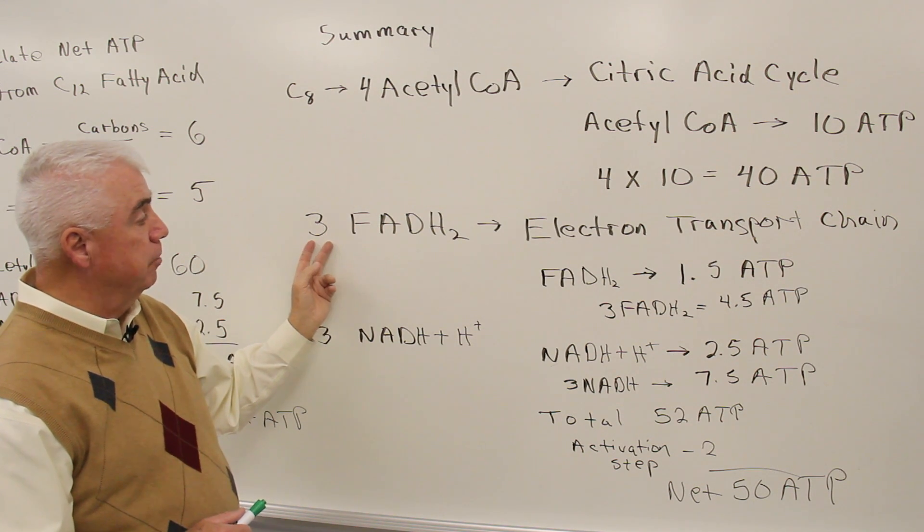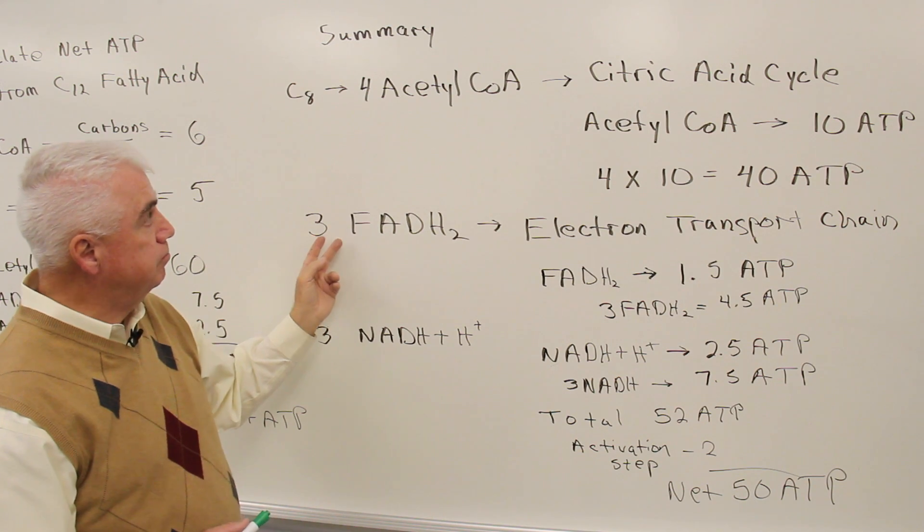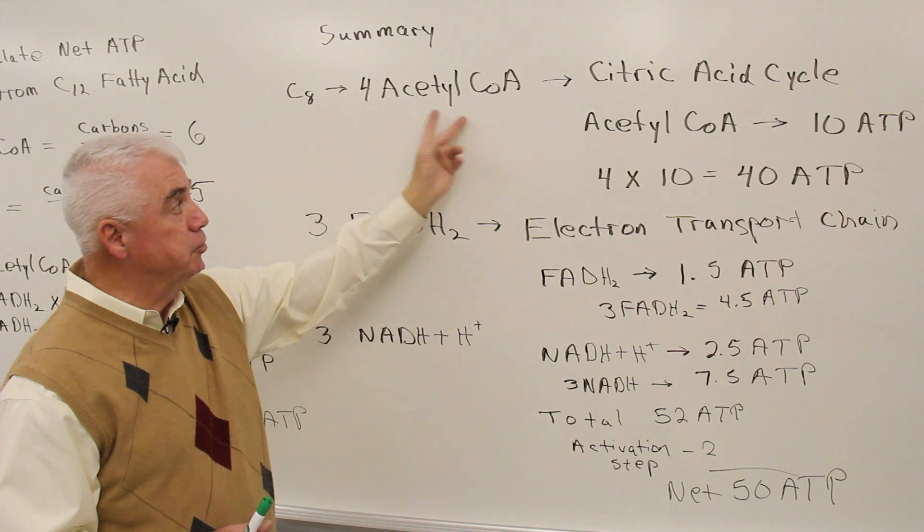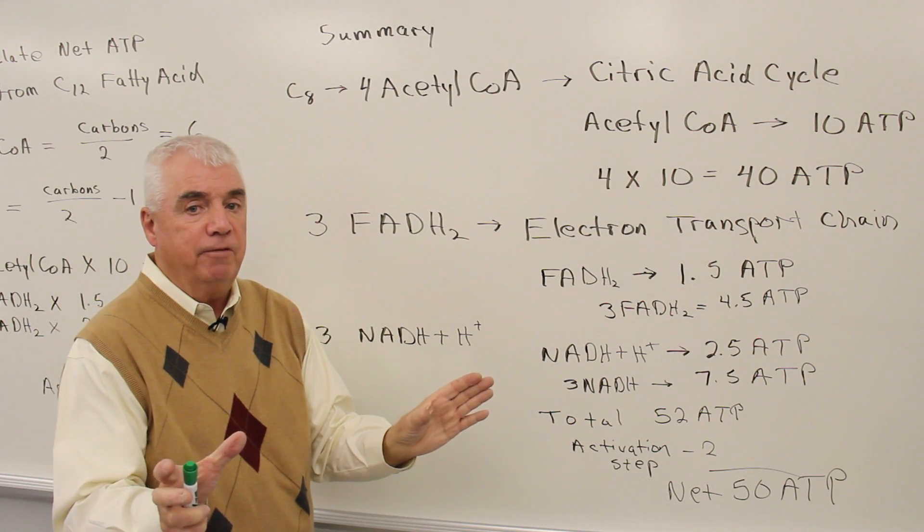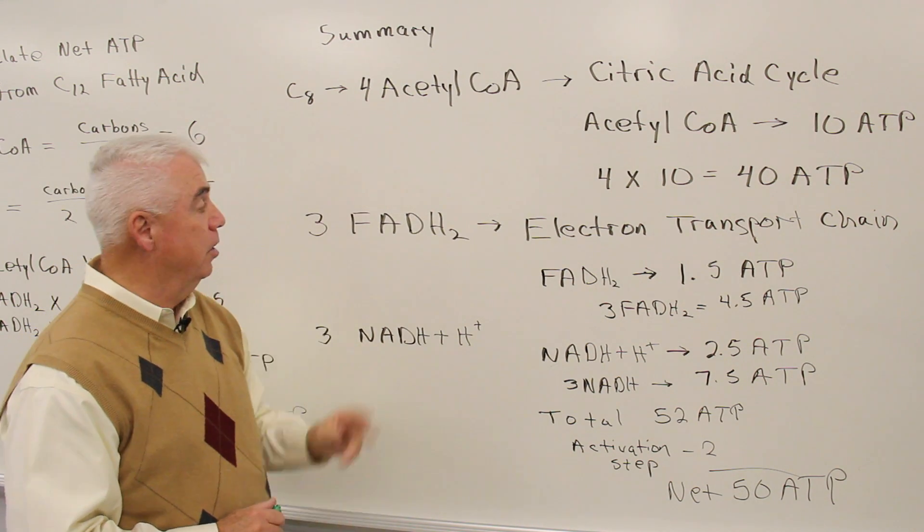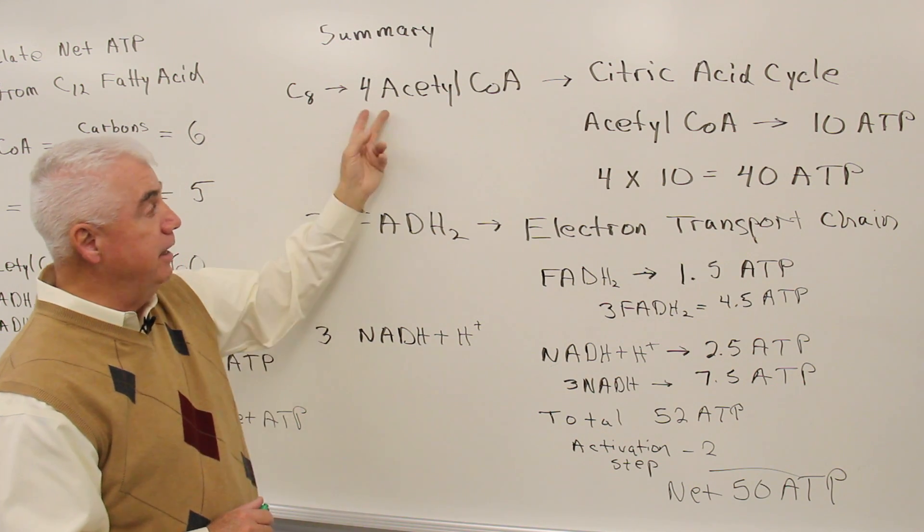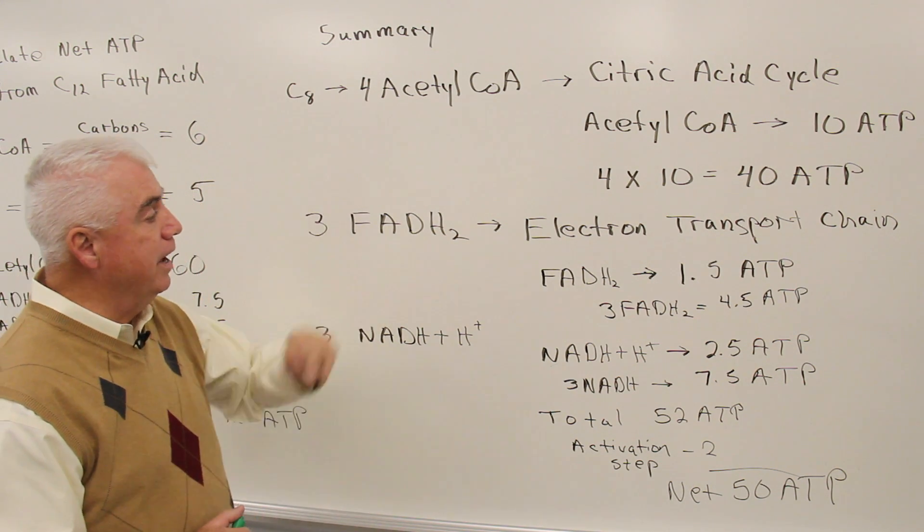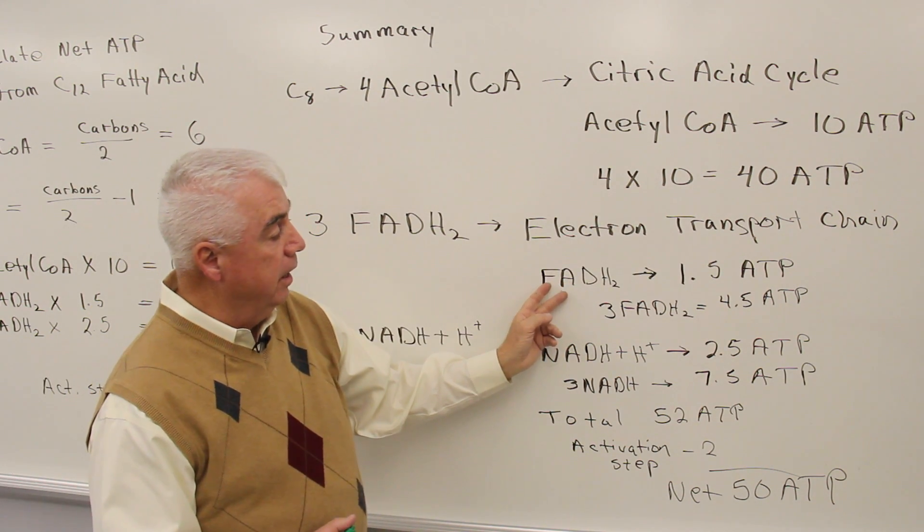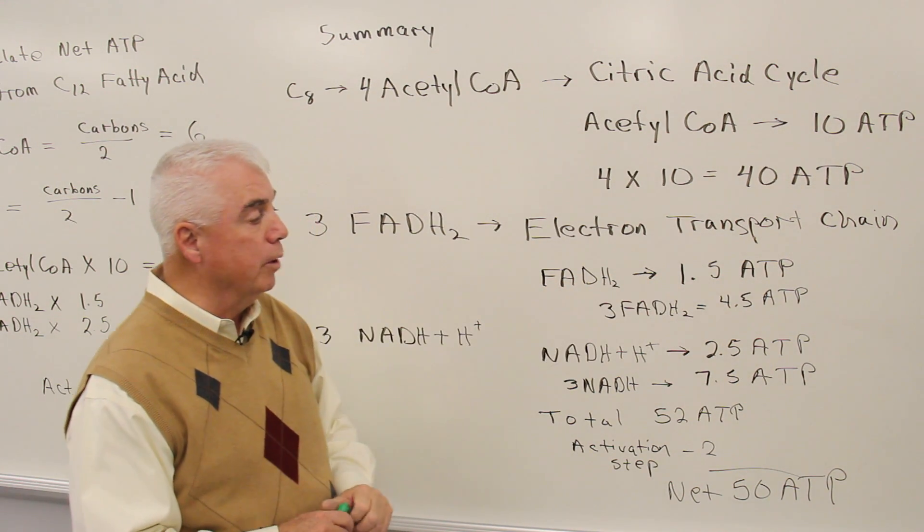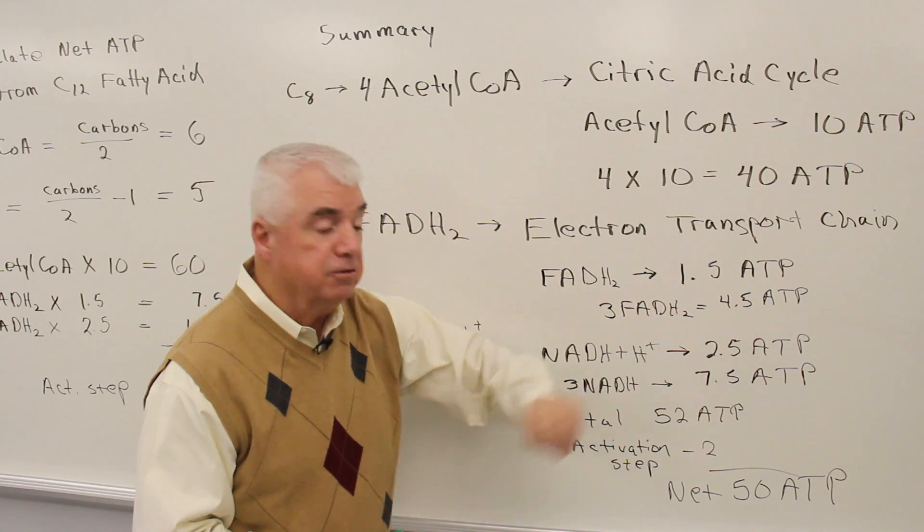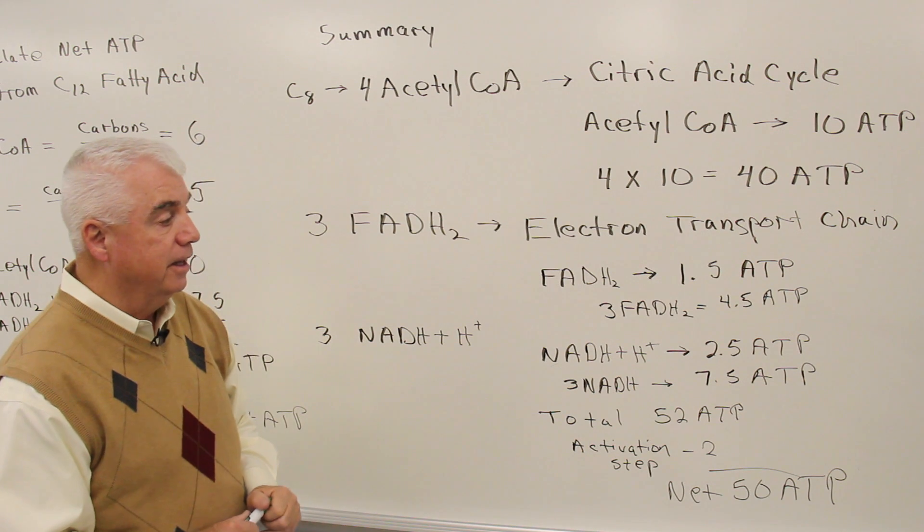The hydrogens now: three molecules of FADH2. We had four acetyl CoAs, but the last trip through the beta-oxidation process gave us two units. That means that we had to go through that series of reactions only three times to accomplish that, even though we get four units. So three FADH2s, when they go to the electron transport chain, every FADH2 gives rise to 1.5 ATPs. Three times 1.5 gives us 4.5 ATPs.